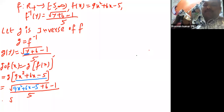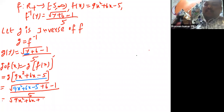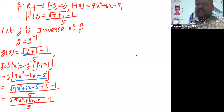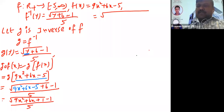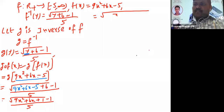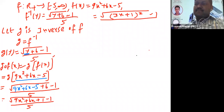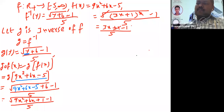In place of y I substituted this complete value. Now: root of 9x squared plus 6x minus 5 plus 6, which gives root of 9x squared plus 6x plus 1. That is nothing but 3x plus 1 whole squared, so the square root cancels, giving 3x plus 1 minus 1 by 3.